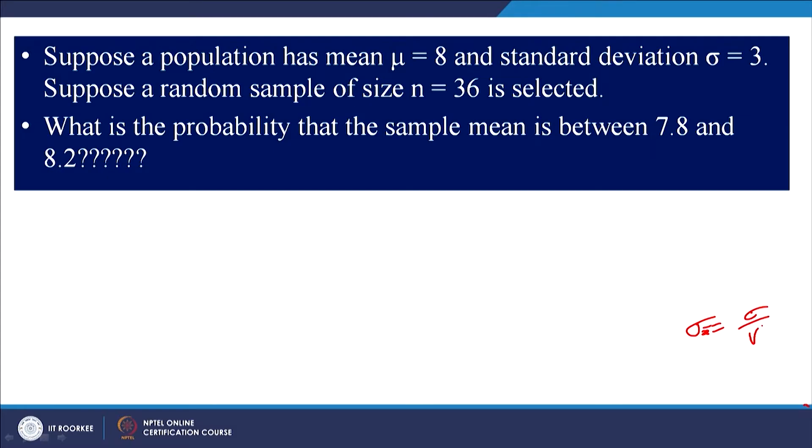But so far as standard deviation is concerned, the standard deviation of the population and the standard deviation of the sampling distribution are different. There is a relationship between the standard deviation of the population distribution and the standard deviation of the sampling distribution, which we call the standard error. We have also seen that as you increase sample size, the distribution of the sampling distribution approaches towards normality.